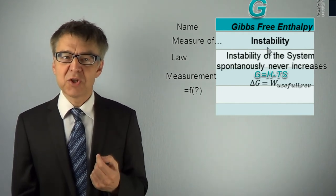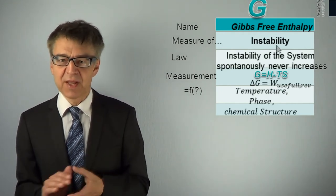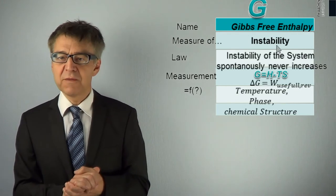Gibbs free energy depends, like H and S, on temperature, phase, chemical structure and dilution, which we have already listed for H and S. And the arbitrary zero point of G are the elements at 298 K.